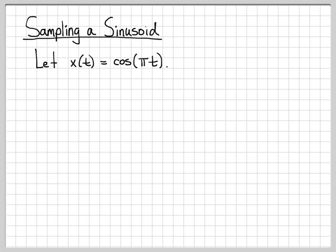The sinusoid has a radial frequency of pi. If you do the math, that turns out to be a frequency of a half hertz, which means it repeats every two seconds. So omega equals pi, the period is two, the fundamental frequency is one over two, or one half.